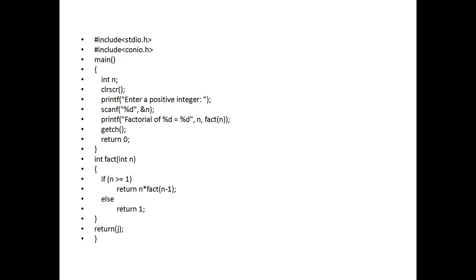Here printf prints the factorial result calling fact(n) — this is the calling of the function. Then getch and return 0. The called function definition is: int fact(int n). If n is greater than or equal to 1, return n * fact(n - 1); else return 1.